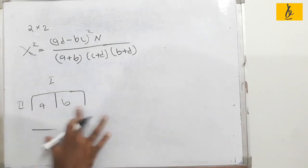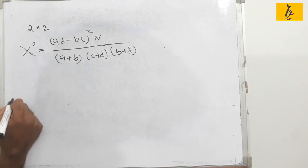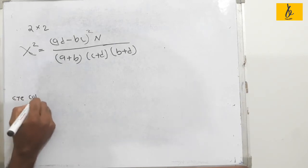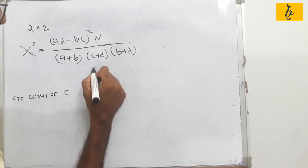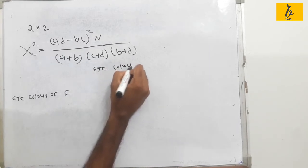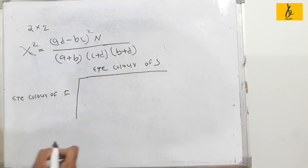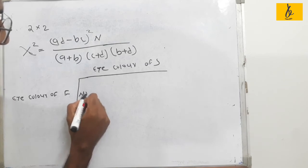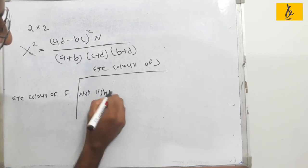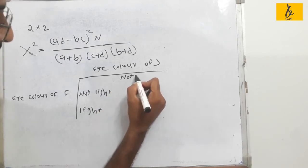We will now do a problem. The first attribute is eye color of the father, and the second attribute is eye color of the son. These are the two attributes. The categories are light and not light.